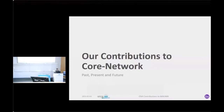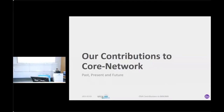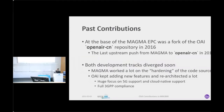My name is Mohit Bias, and I'm working as a software developer at the Open Air Interface. Today I will be talking about the contribution of the Open Air Interface in the MAGMA project from the core network's perspective. The MAGMA EPC was a fork from the OAI original code, known as the Open Air CN, and they used the OAI code from 2016 as the base. The last upstream push from MAGMA to the Open Air CN was in the year 2017.